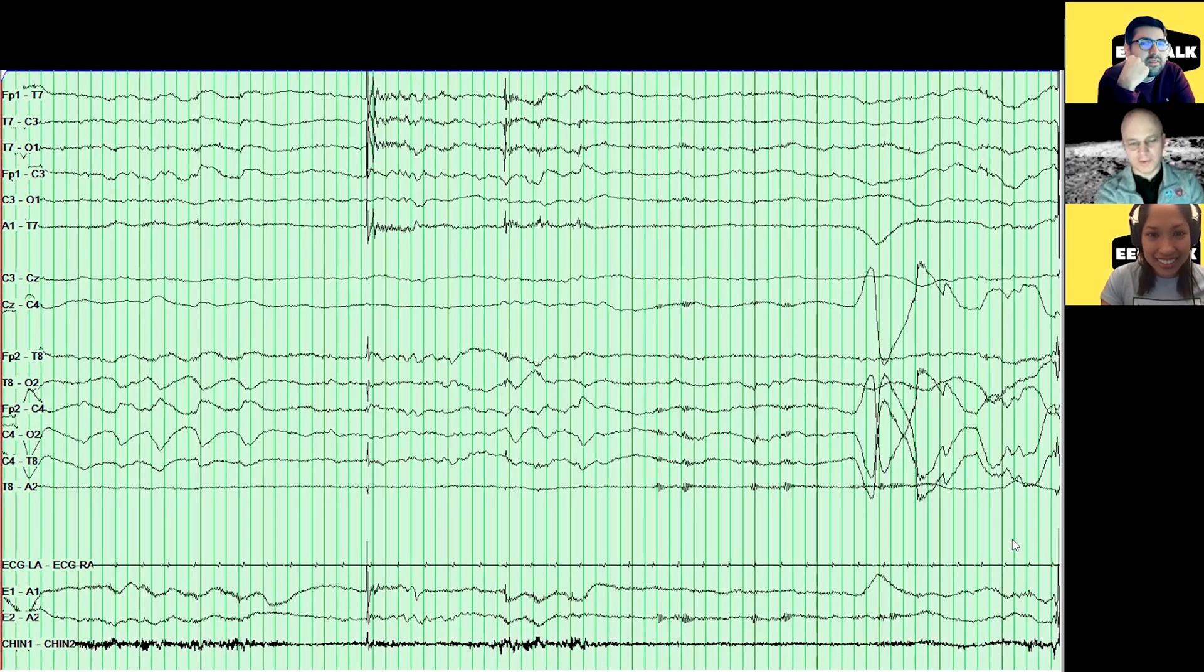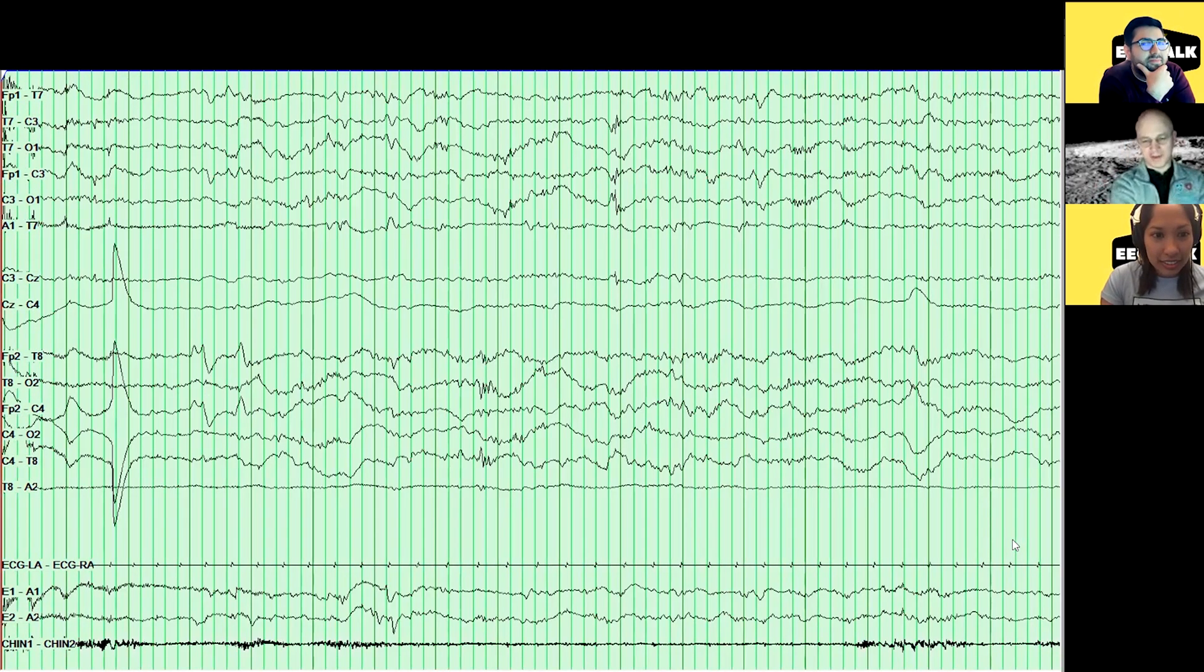Can I ask, so when do you... So there's predominantly delta here. And when do you expect to see predominantly theta? And then when do you see, you know, no slowing? Oh, I see. So essentially, we start to see something that approximates an anterior posterior gradient with a posterior dominant rhythm around three months. I think that's when, you know, you start to comment on a PDR, if you see one or not. Before two or three months, we generally don't comment on it.